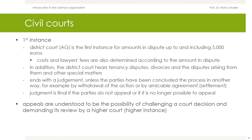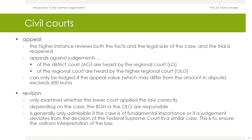Proceedings in the first instance end with a judgment, unless they have been concluded in another way — for example, by withdrawal of the action or by amicable agreement, a settlement. The judgment is final if the parties do not appeal or if it is no longer possible to appeal. Appeals are the possibility of challenging a court's decision and demanding its review by a higher instance. In an appeal, the higher instance reviews both the facts and the legal side of the case, and the trial is reopened.